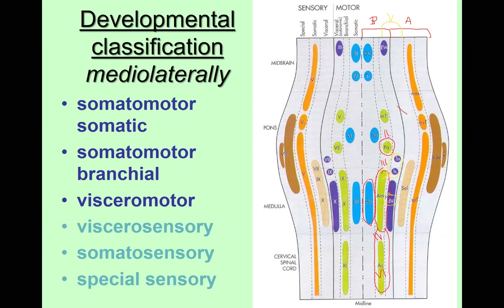On the sensory side, the viscerosensory nucleus is the nucleus of the solitary tract, corresponding mainly to vagus. Then we have the somatosensory, which is trigeminal. The spinal nucleus of the trigeminal nerve will also serve vagus and glossopharyngeal nerves concerning somatosensory sensation for mucosa of the head.